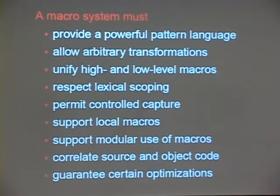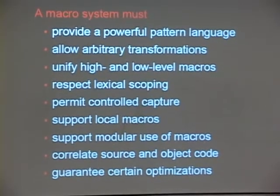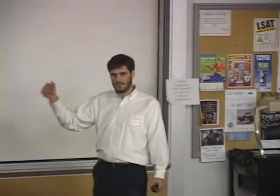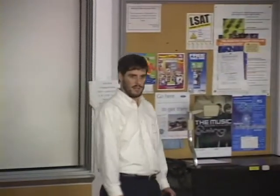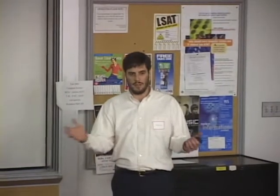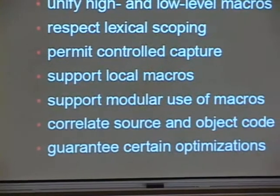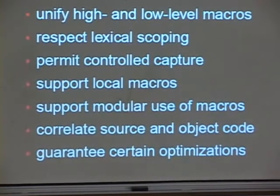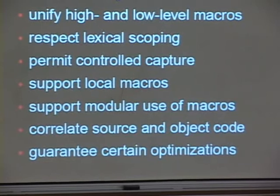Respect lexical scoping. What this basically means is whatever your transformation produces, the macro system has got to make sense of the lexical scoping of that transformation. This doesn't mean you can't write a macro that transforms let into letrec. You're perfectly allowed to do that because you can write arbitrary transformations — you can generate gibberish if you want to. But that gibberish has to be lexically scoped. Now, permitting control capture — we want to be able to bend lexical scoping, not abandon it entirely, but bend it to our purposes. We want to be able to introduce identifiers and let them be visible in both the bindings and the references.